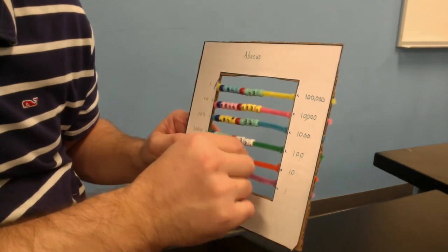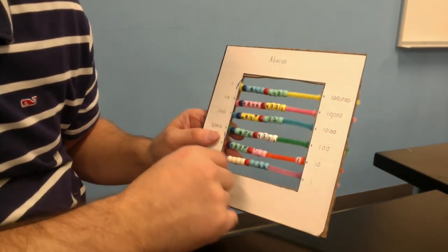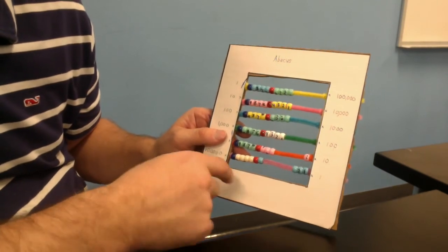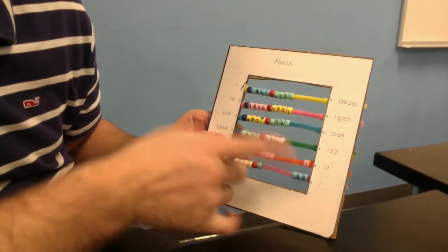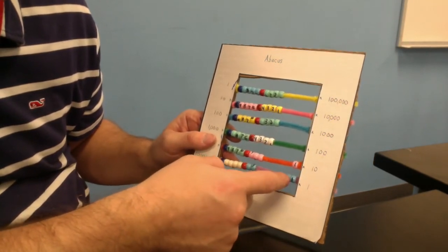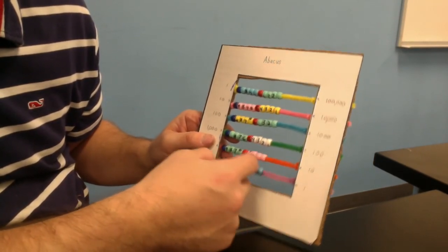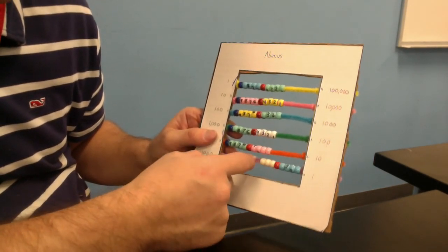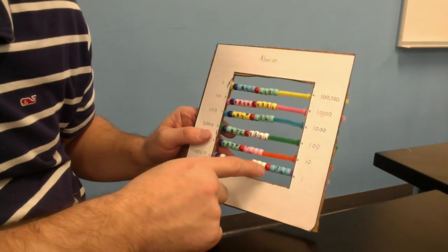Something like 10, let's say 13 minus 5. 13 minus 5. Hopefully you don't need a calculator for this. But if you did that 13 minus 5, you'd say 1, 2, 3, 4, 5. And what we're left with is 8.